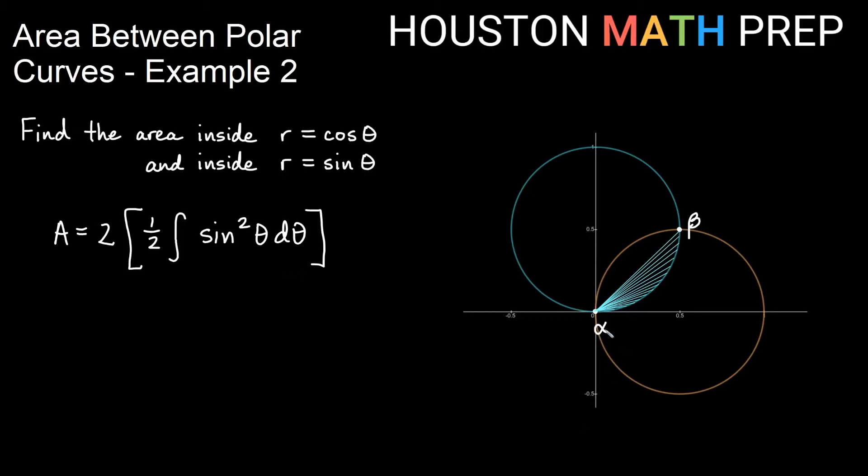So now we want to find alpha and beta so I've got my alpha here, it's on my r equals sine theta at the pole so that would be when that graph has an r value of zero. So this is going to be when sine of theta is equal to zero and where is that true first? Well that's true at theta equals zero so my alpha is going to be zero.